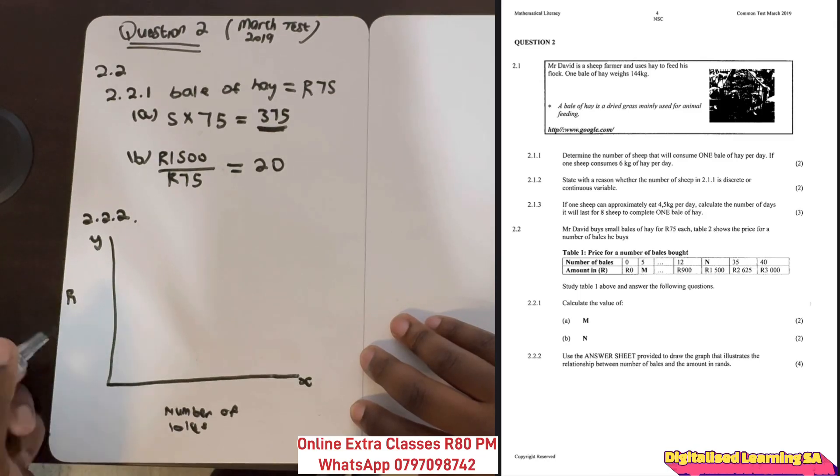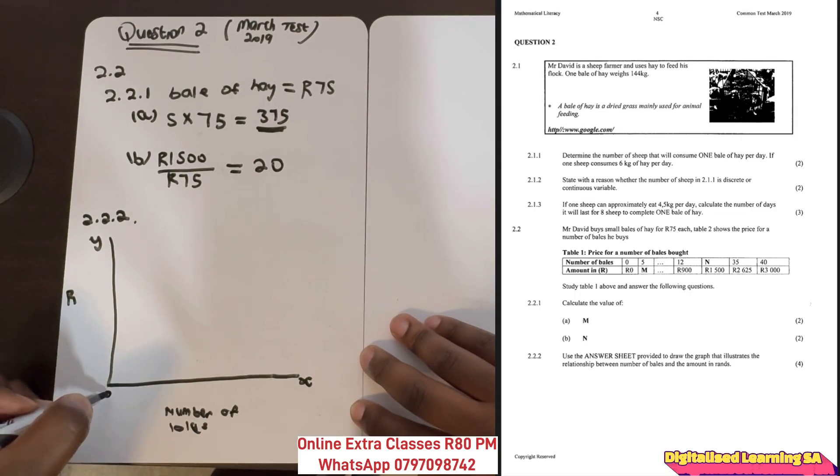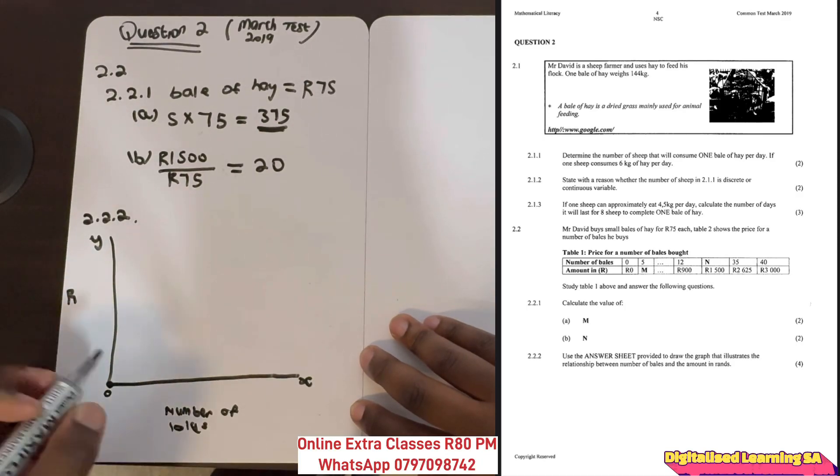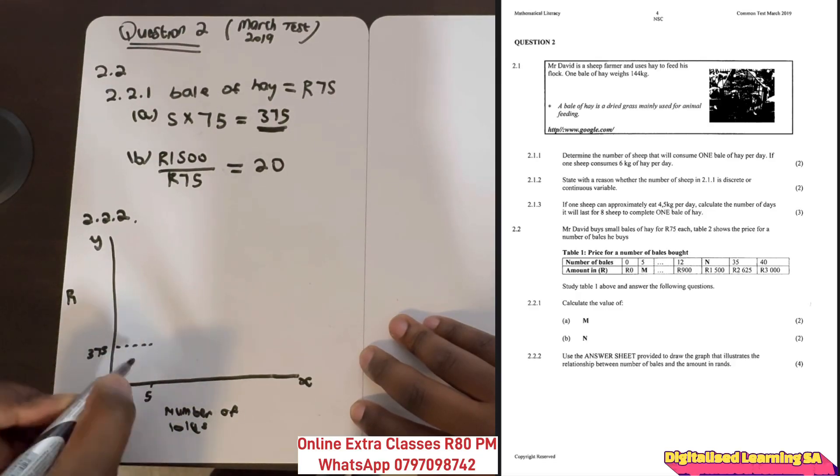The first data point has zero bales and costs zero rent, so there will be a point here. The second one has five bales which costs 375, so we will have a point here.